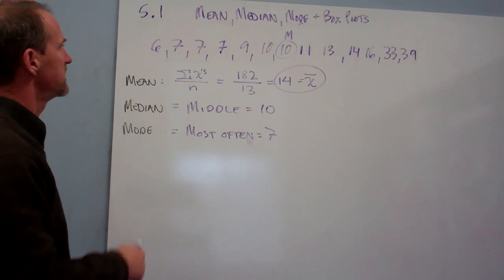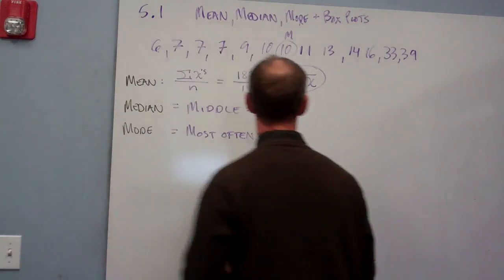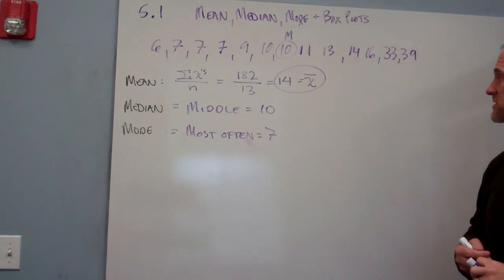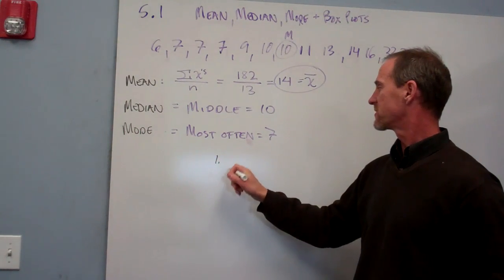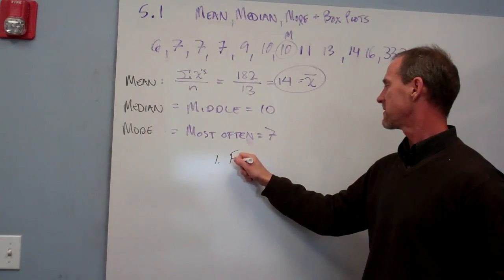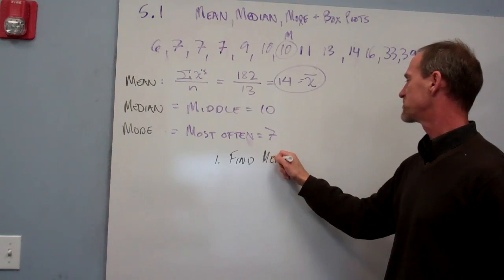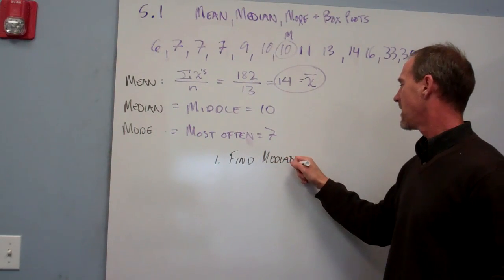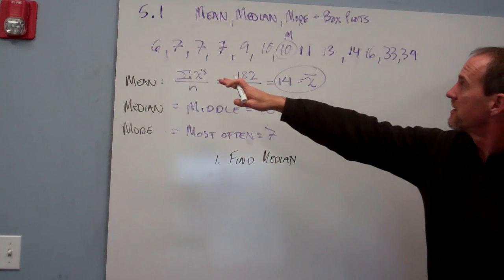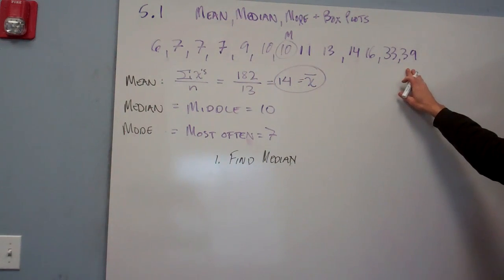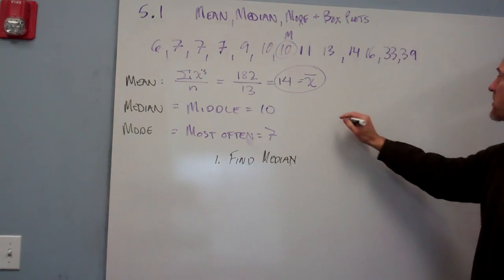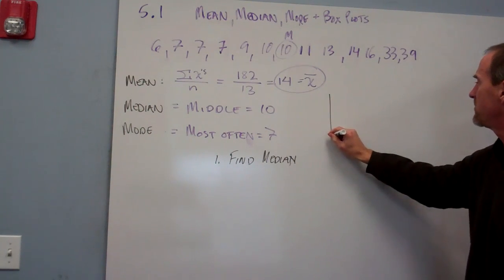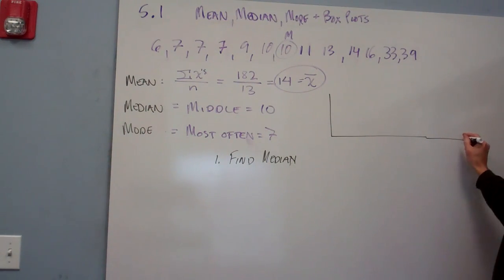Now to find a box plot based on the data set, you are going to do the following set of steps. First thing is find the median, which we have done. Then we're going to look at the entire range of the data from 6 to 39. To graph this, I'm going to make a graph. I'll try to make it as big as possible.